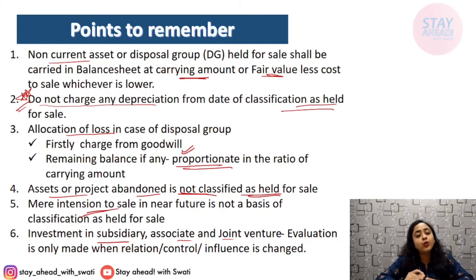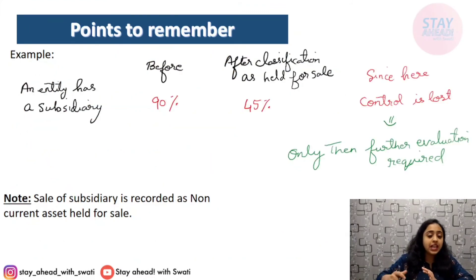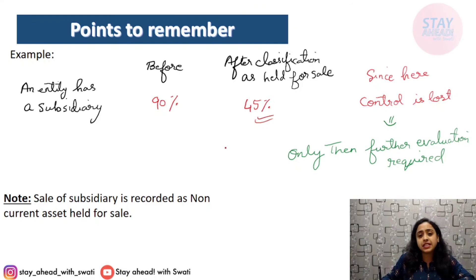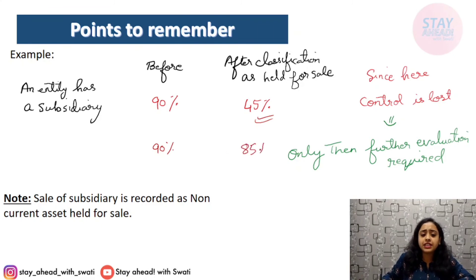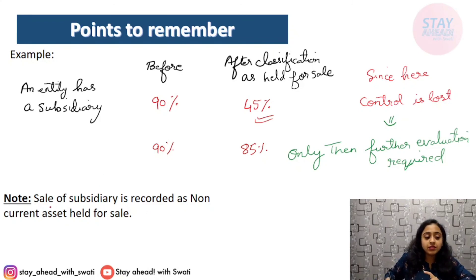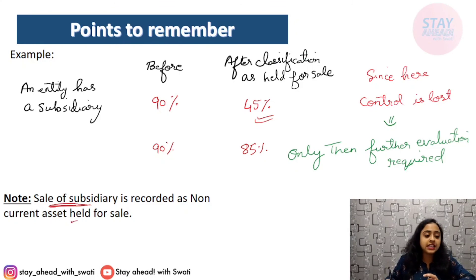Investment in subsidiary, associate, or joint venture will be further evaluated only if the relationship — control or influence — changes. For example, if an entity had 90% control over a subsidiary and after selling reduces to 45%, further classification is required. But if control remains from 90% to 85% with no change in power, further evaluation is not required. Also importantly, a subsidiary can be recorded as a non-current asset held for sale.